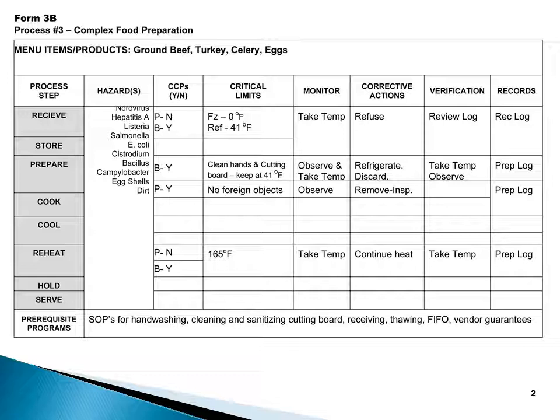Below I have the standard operating procedures that would probably be in place: how to properly wash your hands, how to properly clean and sanitize cutting boards, the receiving standards such as proper temperature and authorized companies, product put away immediately. Proper SOPs for thawing the ground beef, SOPs for using first in first out, and SOPs for getting your vendor guarantees when you receive the product. That's what mine looks like — you should look something similar to that. And that is a HACCP plan.